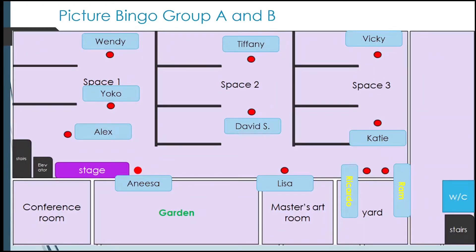This is the floor map setup for Picture Bingo for Groups A and B — this will be for the first activity only. All teachers will probably be standing in their spot for about 30 minutes. Ricardo and Ram, you will be guarding the gate to the garden, and I will provide you with the question on your teacher instruction sheet.